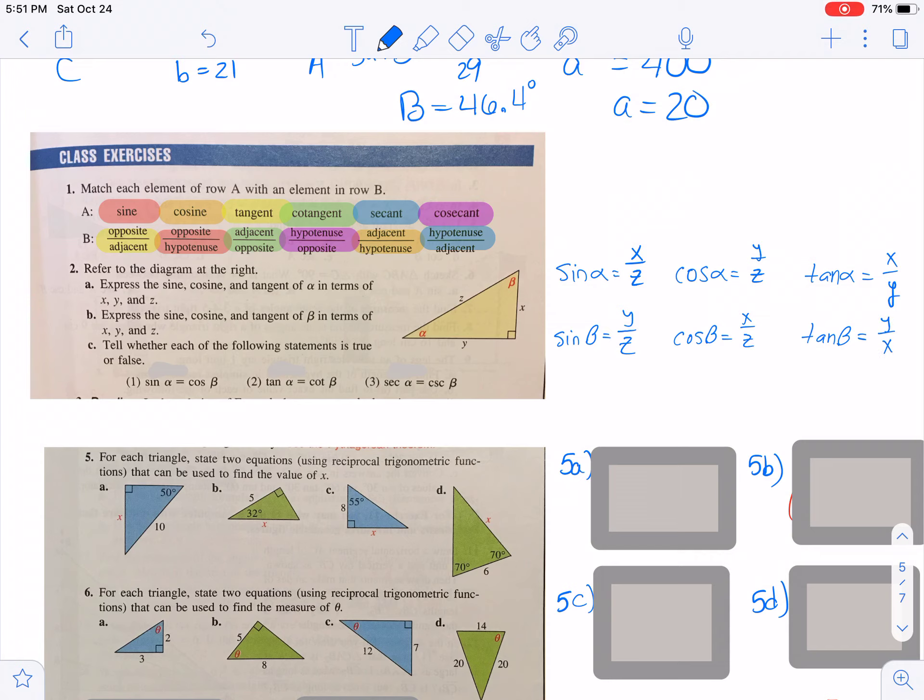And then you can use those for part c that says tell whether each of the following statements is true or false. And the first one says the sine of alpha is equal to the cosine of beta. Well, the sine of alpha and the cosine of beta are the same. So you can say yes to that first one or true. Then tangent of alpha is equal to the cotangent of beta. And we don't have the cotangent of beta listed, but it's the reciprocal of the tangent. So if you flip these, it would be the same thing, x over y. So that one's true. Then secant of alpha, again, we don't have the secant listed, but it would be the reciprocal of the cosine. So we're looking for z over y. Is that the same as the cosecant of beta? And again, we don't have cosecant, but we flip the sine. And so that would be z over y. So that one is also true.